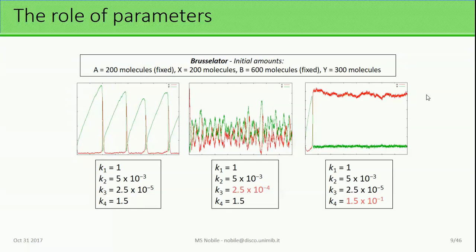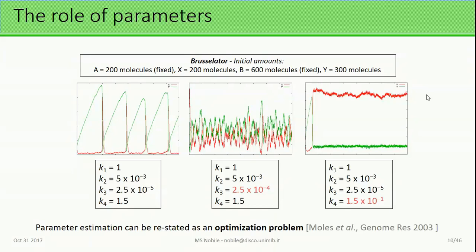So we need a specific parameterization in our model if we want to perform faithful, meaningful simulations. Naturally, if we don't have these parameters — because they might be impossible or too expensive to calculate using laboratory experiments — we need automatic methodology to obtain them. This problem can be restated as an optimization problem: we collect the time series of our system in a laboratory, and try to minimize the difference between the expected behavior and the simulation.